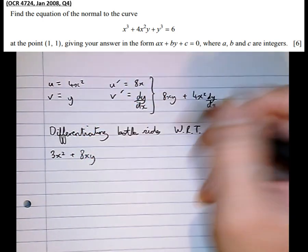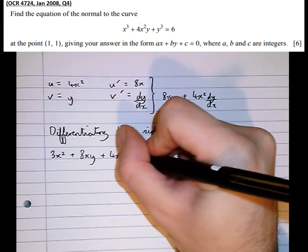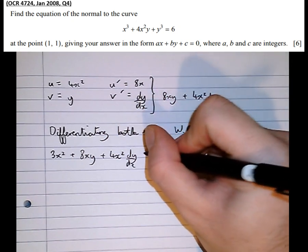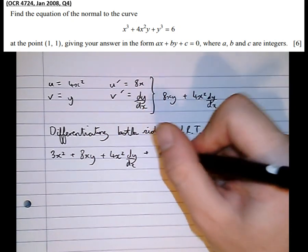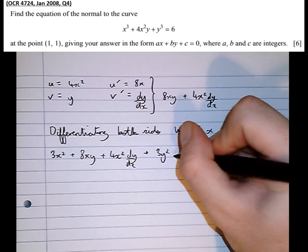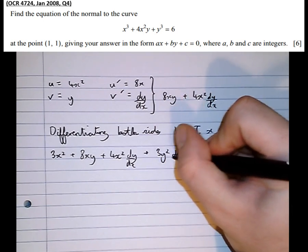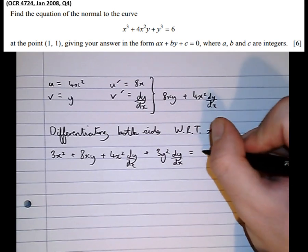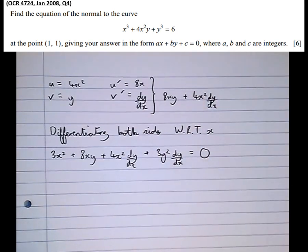First term x³ differentiates to 3x² plus 8xy plus 4x² dy/dx plus, differentiating y³, we get 3y², but because we've just differentiated a y, we need to multiply by dy/dx, equals, and the differential of 6 is 0, any number differentiates to 0.